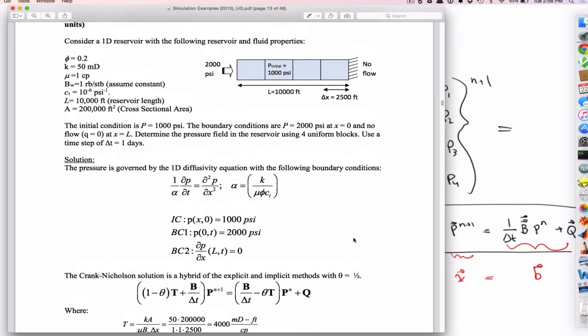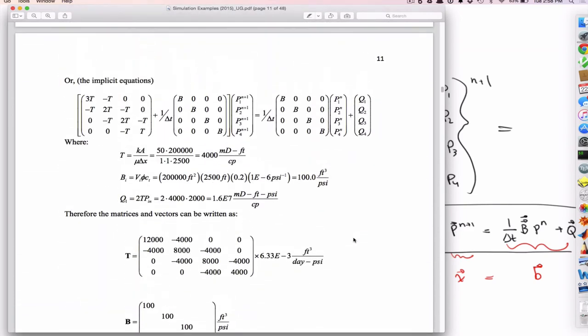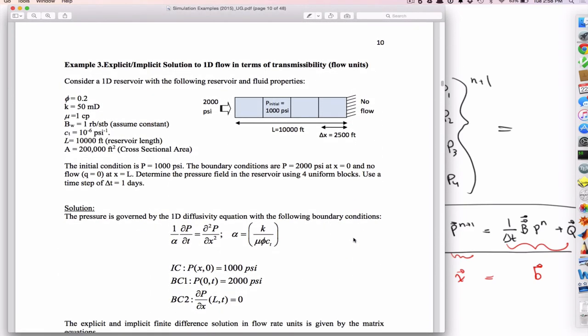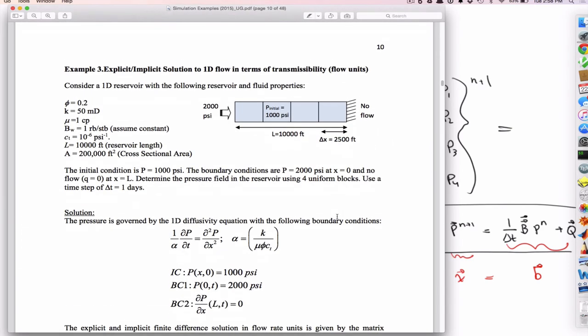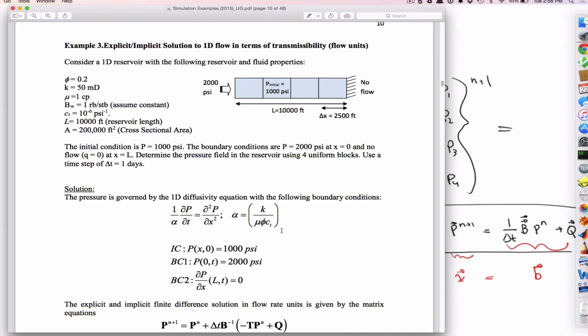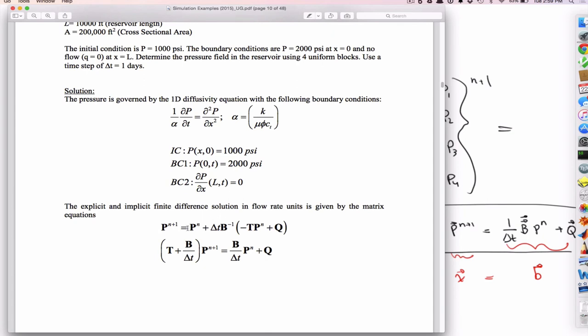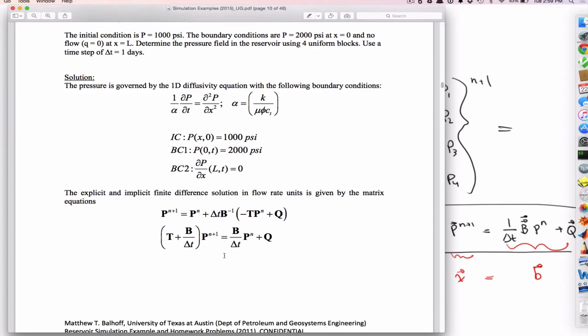So there's an example. If you go to the Canvas, the files, there's some example problems. I think Dr. Baalhoff showed you these, or worked these, in terms of pressure and eta, right? He worked this. So this third example is in terms of the so-called transmissibility form, which is the form of the equations we'll use for the rest of the semester. Okay? And so these equations, again, you'll see there the equations that we derived. The first one, we didn't derive it, but I wrote it down for the explicit. The second one is for implicit.